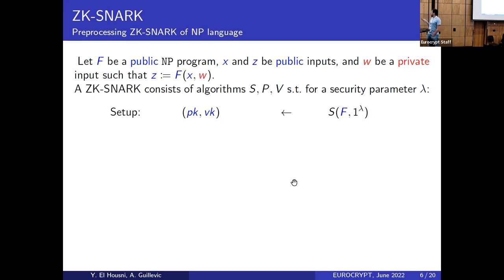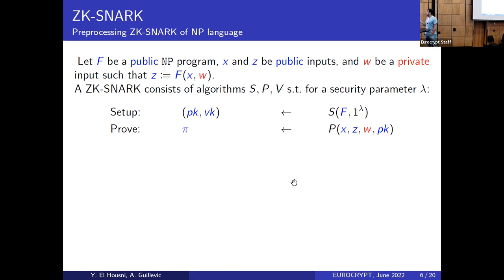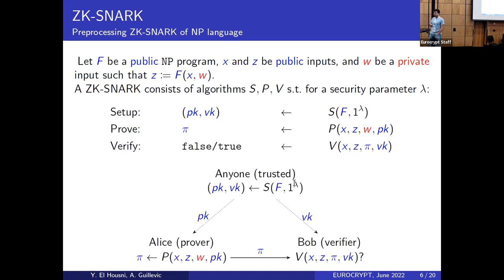A SNARK typically consists of three algorithms. Setup takes the program F and security parameter lambda and outputs key material — a proving key pk and verification key vk. The proof algorithm takes the public and private inputs along with pk, which encodes the program, and outputs a proof pi. The verification algorithm takes the public inputs and proof pi and outputs a boolean. The setup can be done by anyone, by a trusted party, or via multi-party computation.